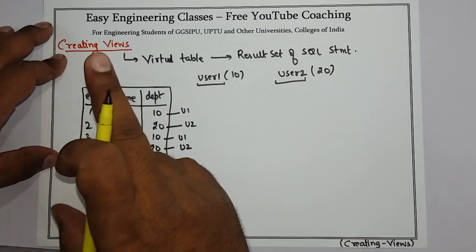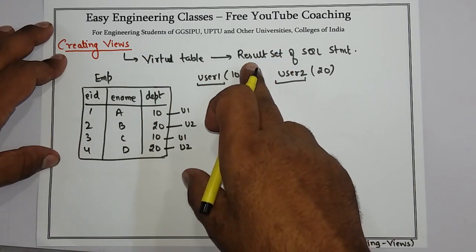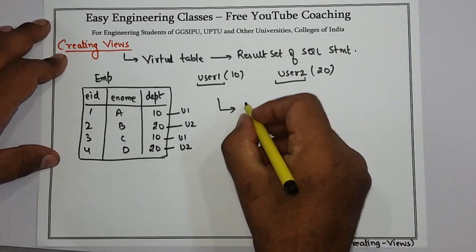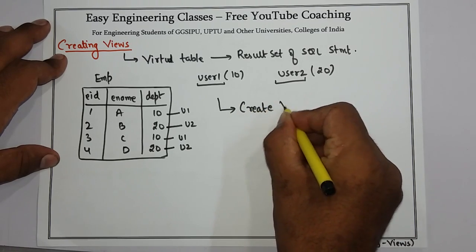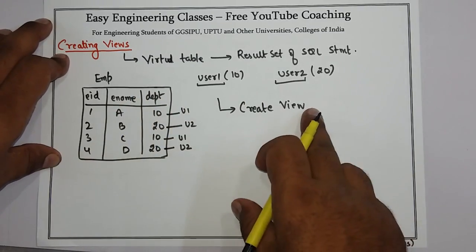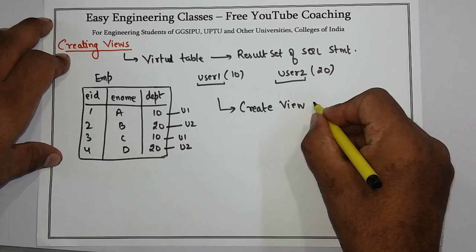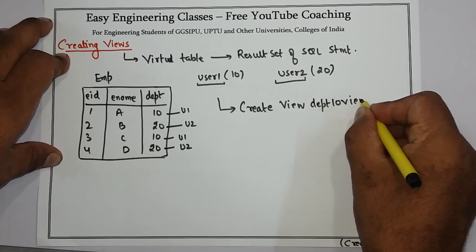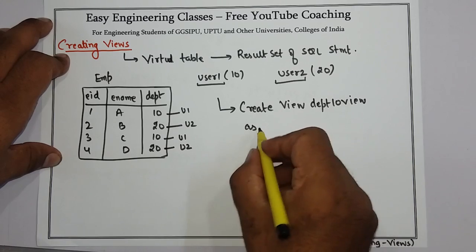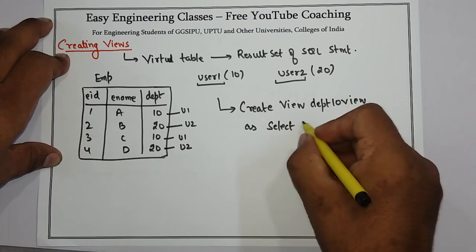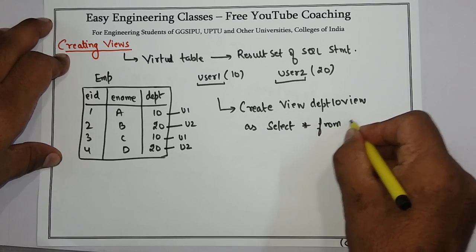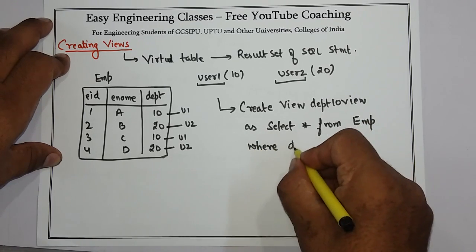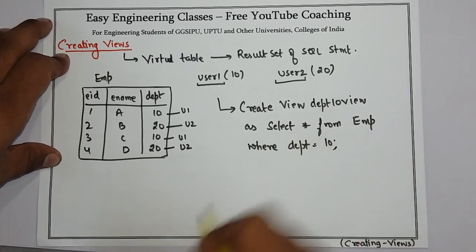So what we can do is create views, which are logical or virtual tables based on the result set of a SQL statement. For this I can create a view with the syntax: CREATE VIEW, then the name of the view — which can be department10_view — then AS SELECT * FROM EMP WHERE department = 10. This particular SQL statement is what I am talking about here.